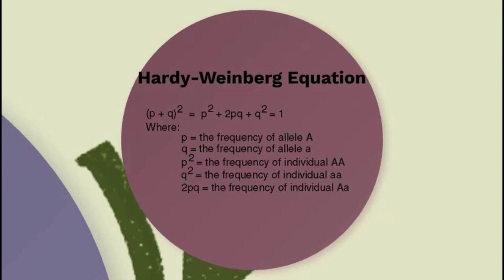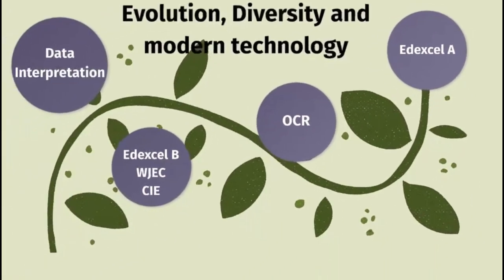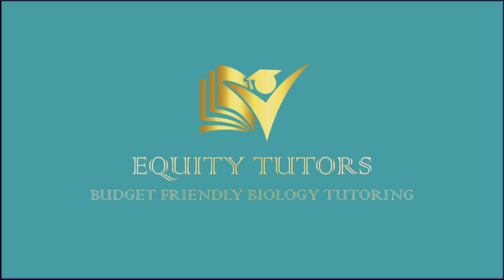Finally, the Hardy-Weinberg equation has specific conditions: no mutations present, a large population, an isolated population, no selection pressure, and random mating. Thank you so much for listening. You can access additional content on our Patreon page by searching for Equity Tutors, where we have a second 30-minute lesson every week plus monthly bonus content. You can also find us on most social media platforms by searching for Equity Tutors UK. Please like, share, subscribe, and comment wherever you're listening, and if you're enjoying the content, please leave a review.